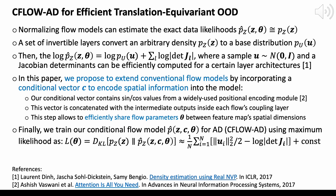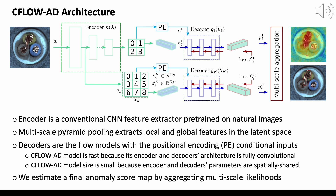Our C-Flow AD architecture consists of two main parts. First is the encoder, which is a conventional CNN feature extractor pre-trained on natural images. Second is a set of flow decoders that independently process feature vectors extracted from the multi-scale feature maps of the encoder. We estimate the final anomaly score map by aggregating those multi-scale likelihoods from the flow models.